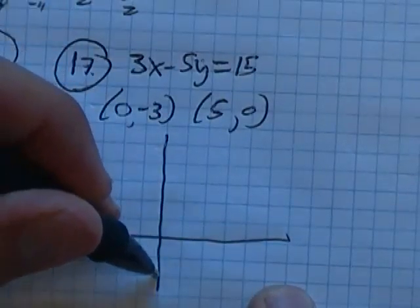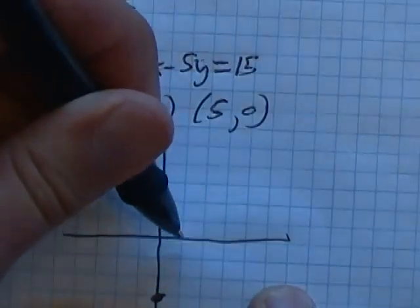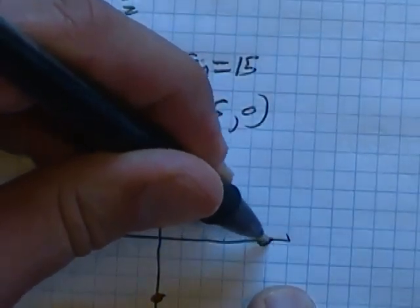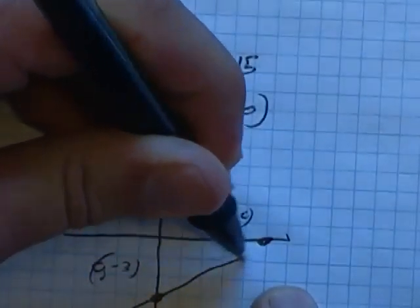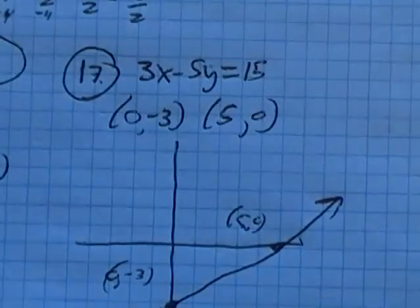Zero, negative three. One, two, three is here. Five, zero, one, two, three, four, five is here. There's my x-intercept. There's my y-intercept. Nice straight line. Done.